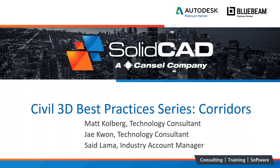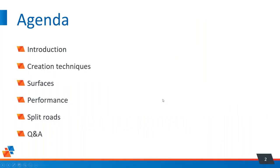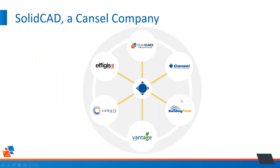This is the second best practice series. Today we're going to be talking about industry best practices when working with corridors. Today's agenda includes a brief intro, creation techniques, surfaces, performance, split roads, and a Q&A. Please use the question panel in the GoTo options on your right. We're going to be addressing those questions along the way and taking some at the end.